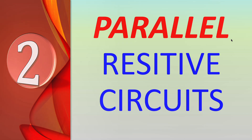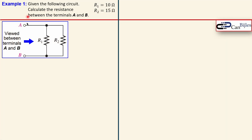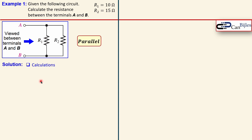The second part covers purely parallel resistor circuits. In the first example, we again have terminals A and B, now with two resistors in parallel — because the two nodes of each resistor connect to the same two nodes. The question is again to calculate the resistance between terminals A and B. Since this is a parallel combination, we need a different formula.